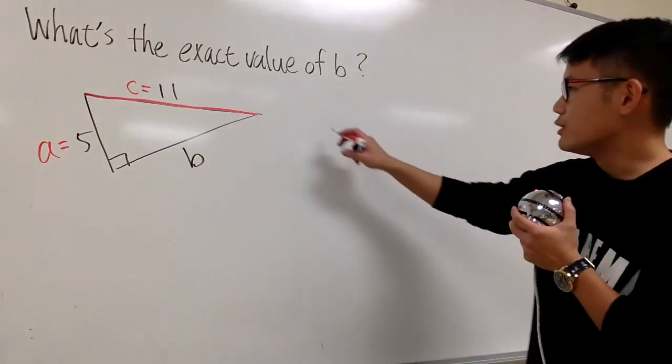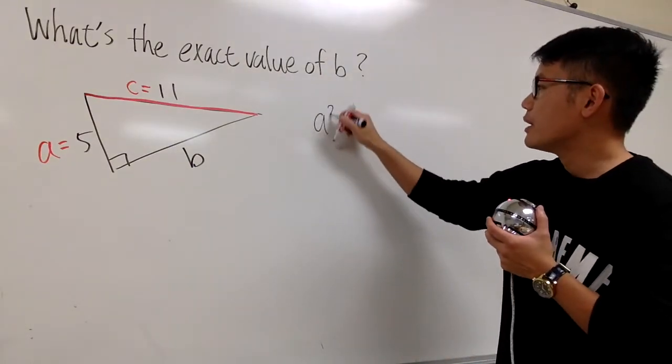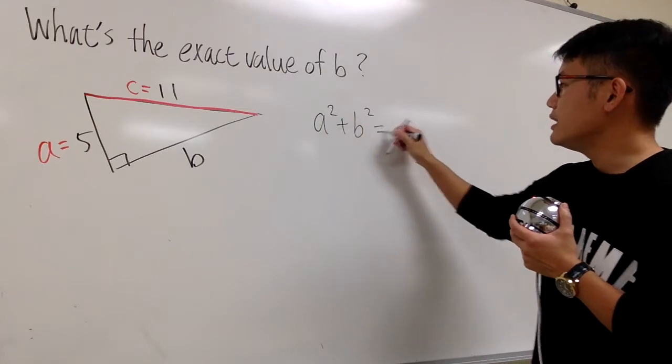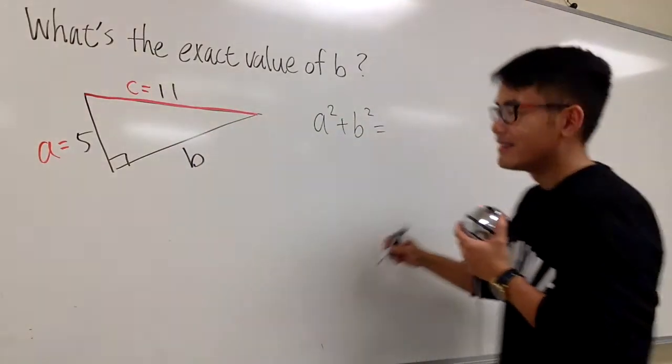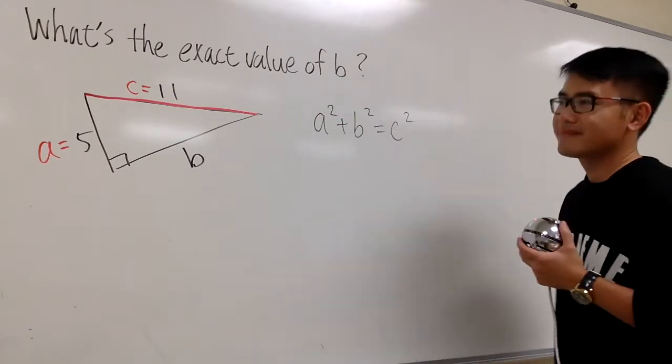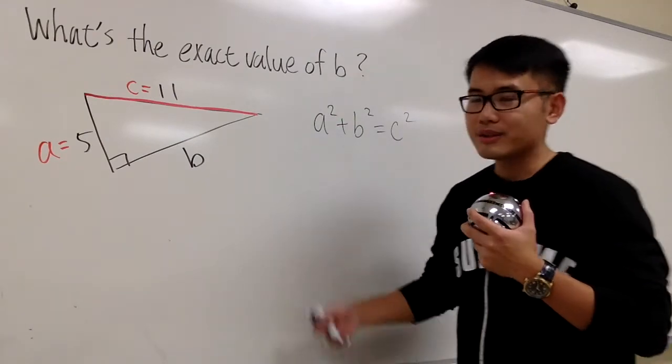Here we go, Pythagorean Theorem says, we have a² + b² is equal to the hypotenuse squared, which is the longest side here. So, it's c². And I just have to plug in the numbers and work it out.